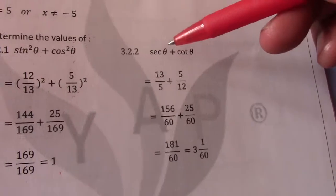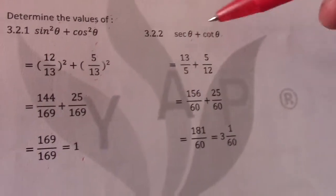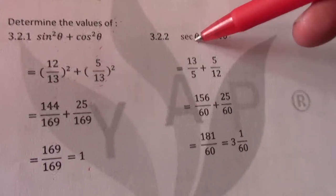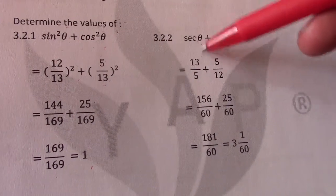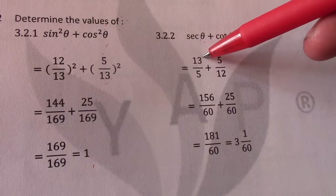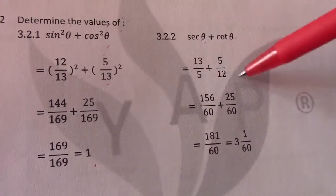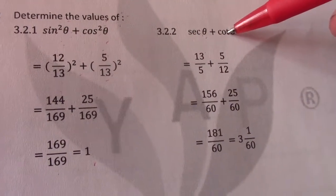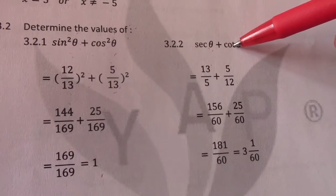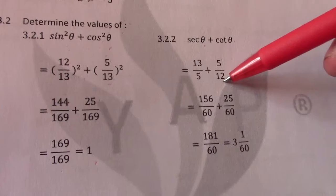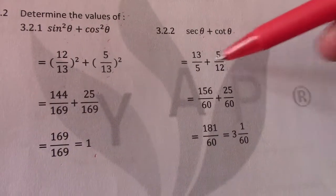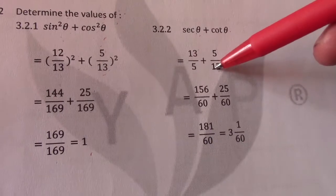Go to second problem. I have sec theta plus cot theta. So there I have sec theta. I should know it's the reciprocal of cos theta. So that becomes R over X. So my R value is 13. My X value is 5. Cot theta reciprocal of tan. So that becomes X over Y. So my X value is 5. My Y value is 12. To add two fractions, denominators must always be the same.